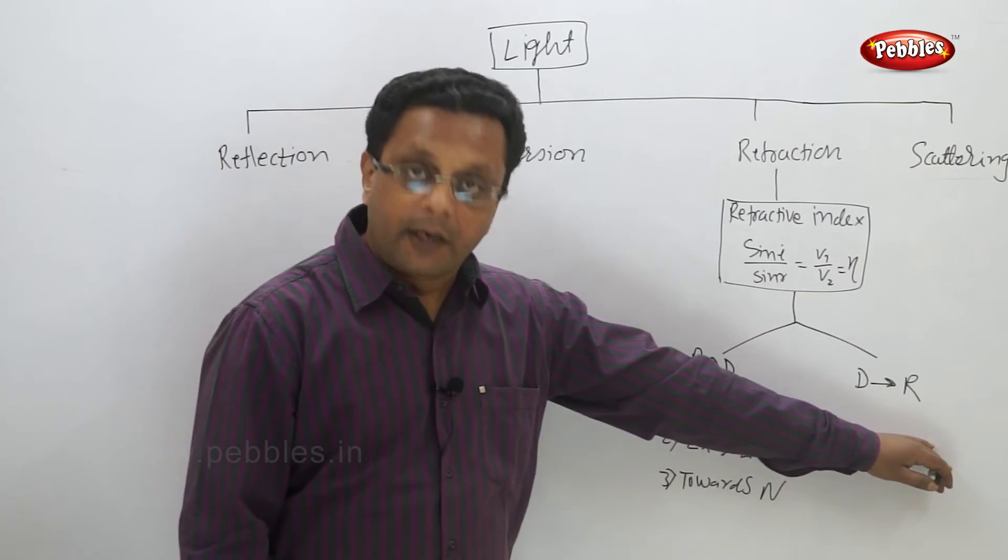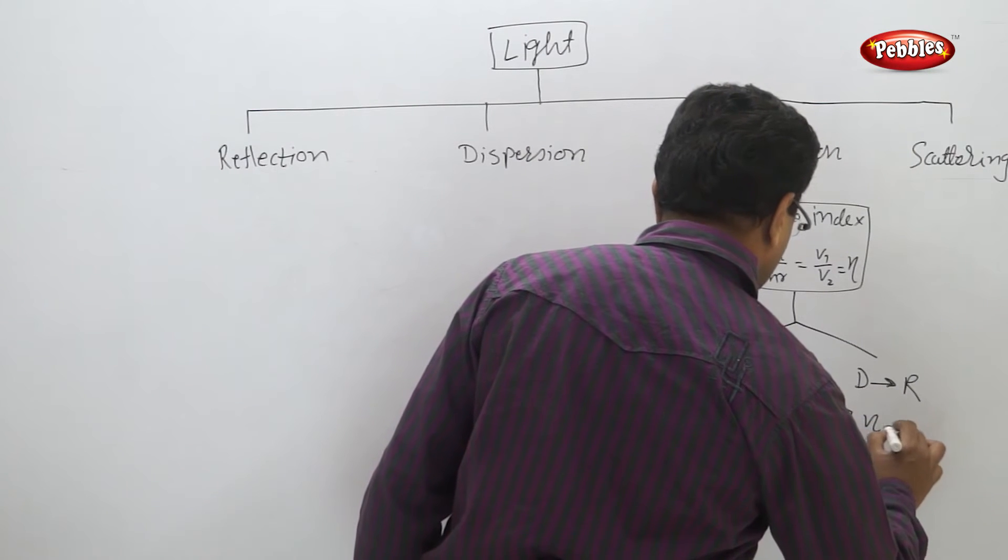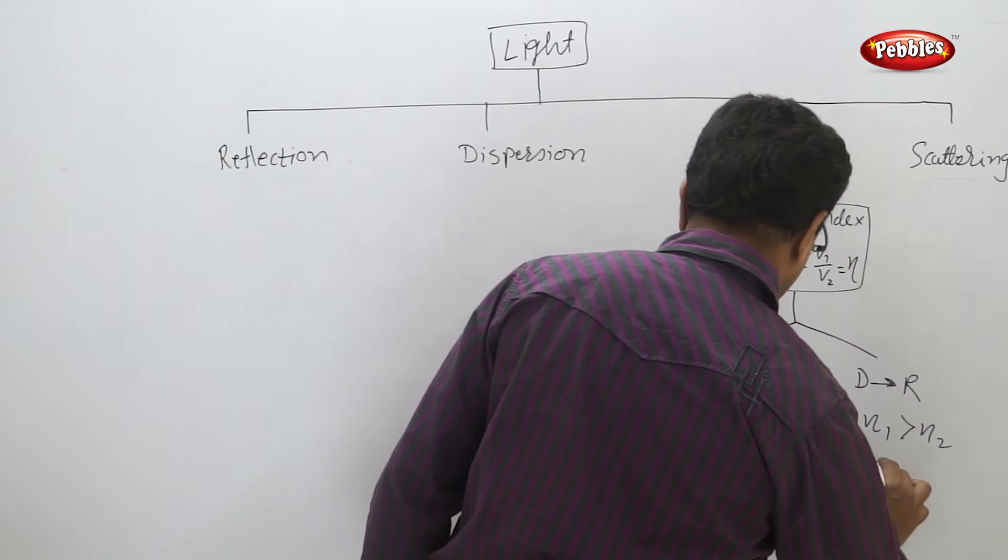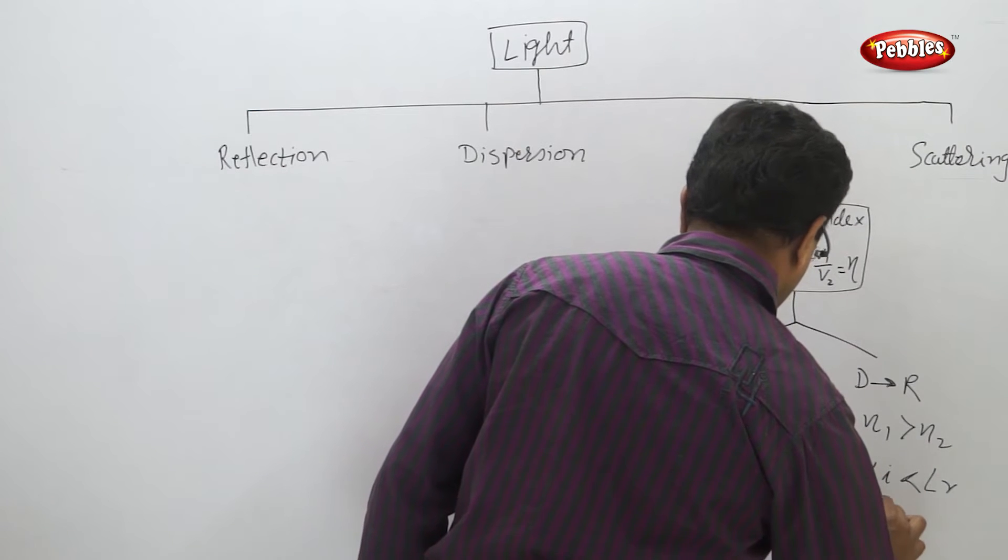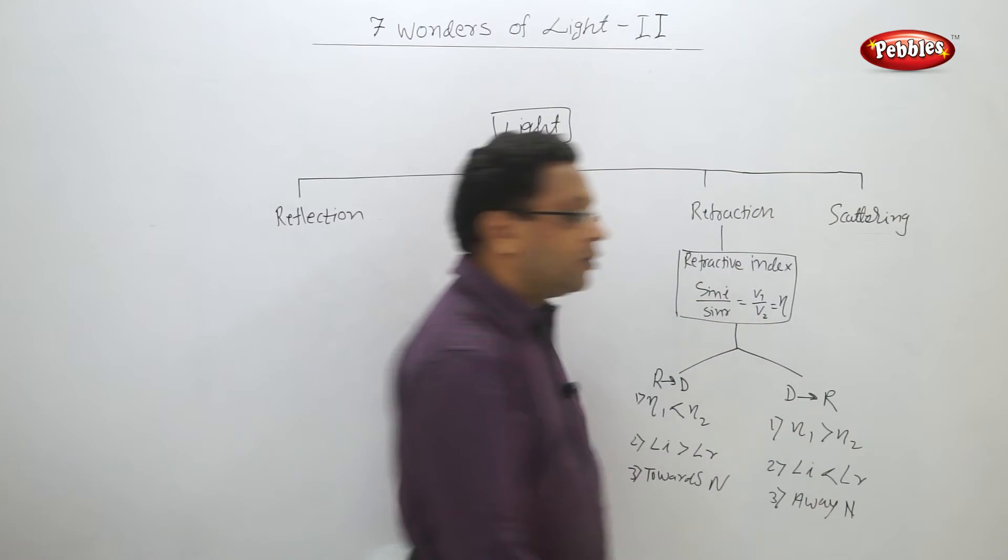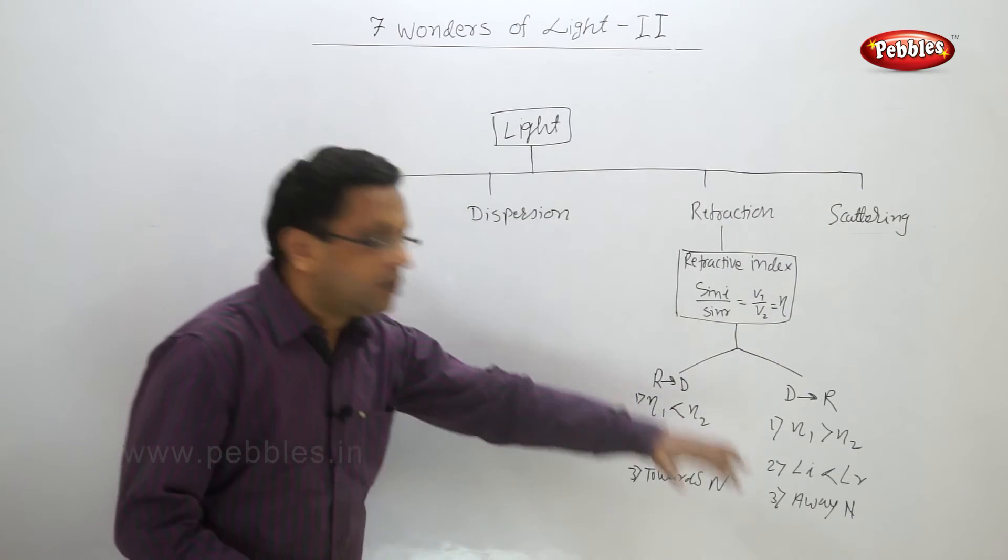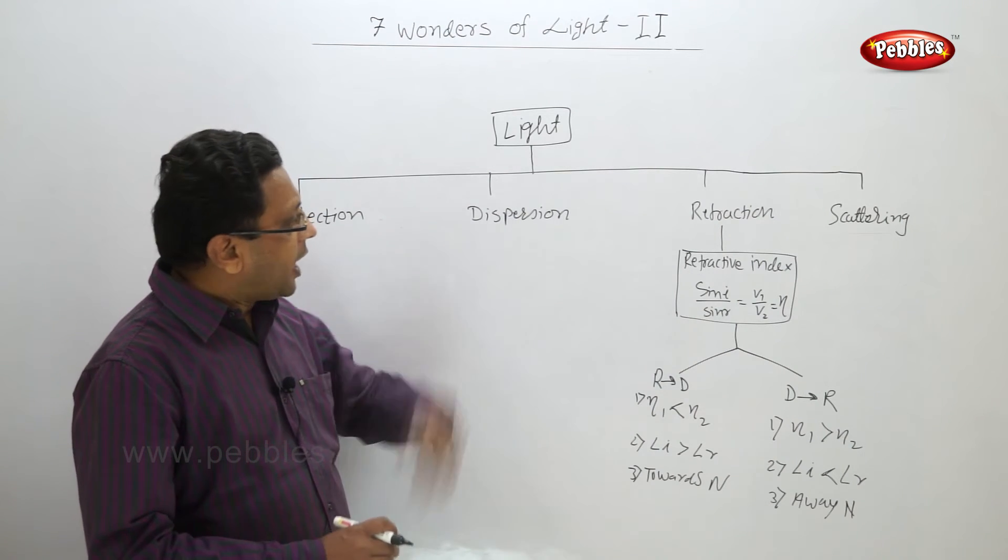n1 is greater than n2, angle i is less than angle r, and away from normal. So here we finish refraction.